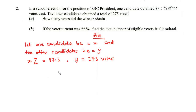Take notice of the difference here: X% is a percentage value, while Y equals 275 votes, which is an actual vote count — a number, not a percentage.